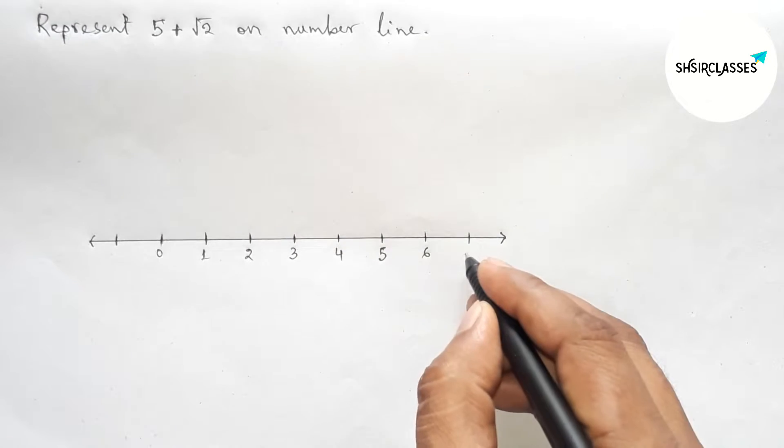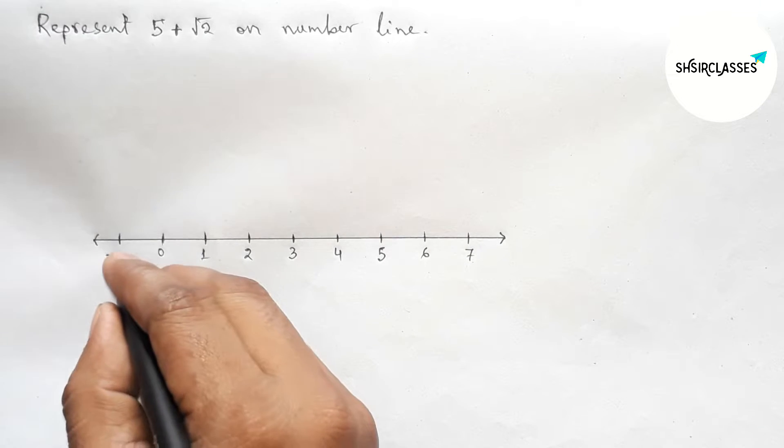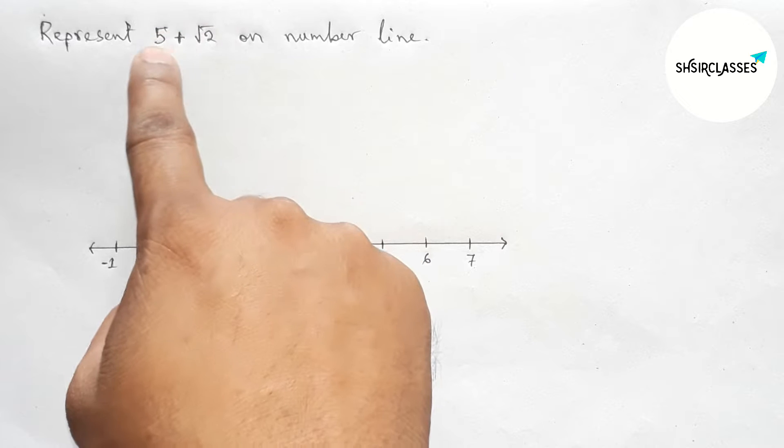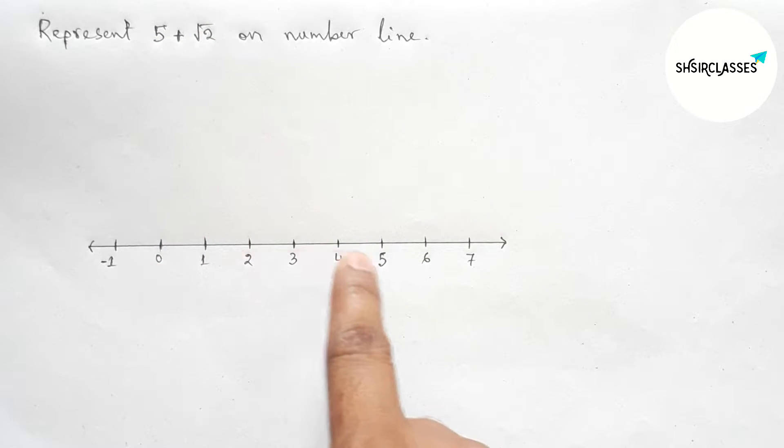Next representing 5 plus root 2. So first counting 5, then representing root 2 between 5 to 6.